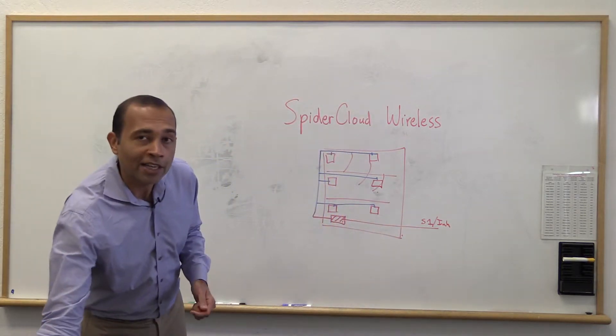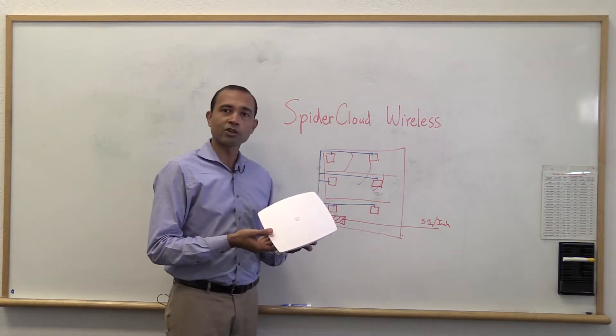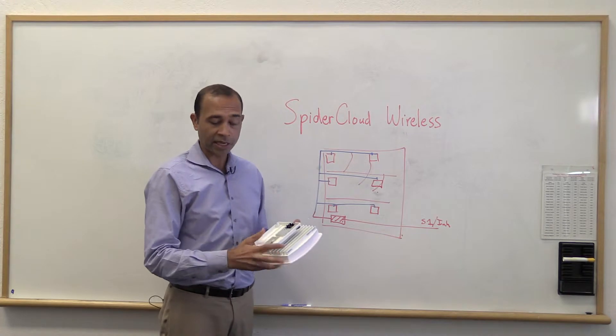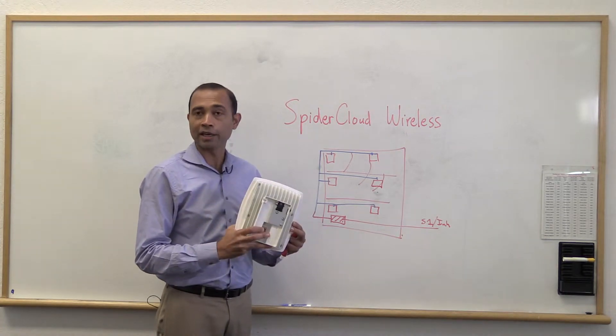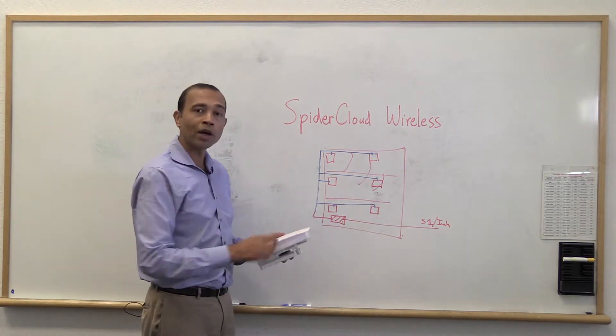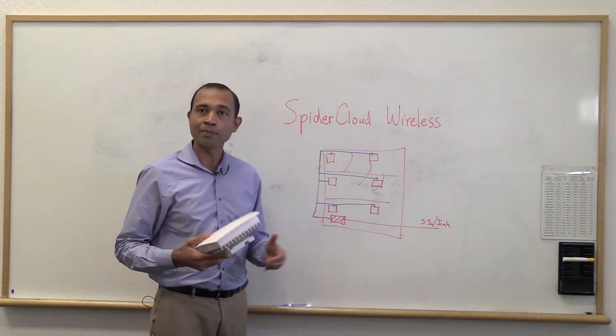If you look at one of our access points, it looks just like a Wi-Fi access point actually. It just has a single Ethernet port and we get all power and connectivity through this Ethernet port. And you can take 100 of these access points and set them up in an enterprise.